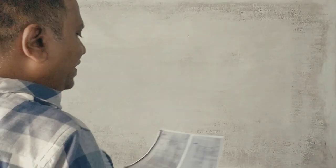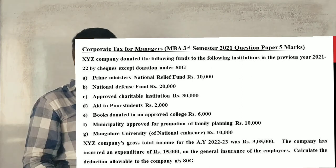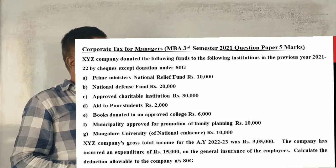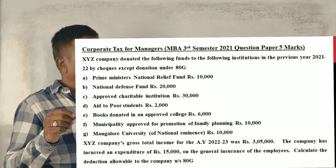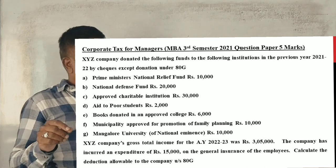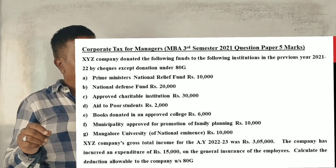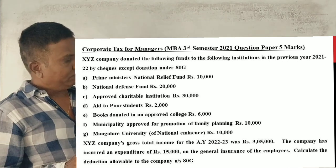Hi guys, this is a 2020-21 question paper, 5 marks, section 80G question. XYZ company donated the following funds to the following institutions in the previous year 2021-22 by checks, except donations under section E. First one...